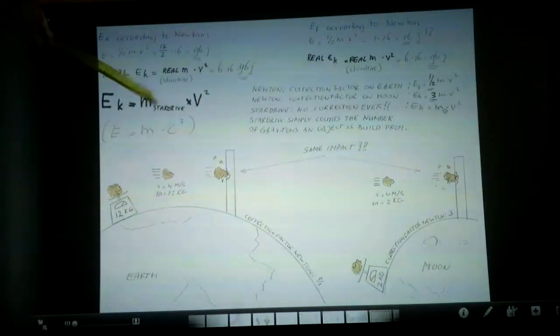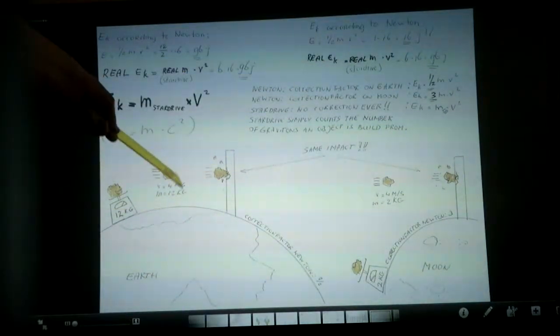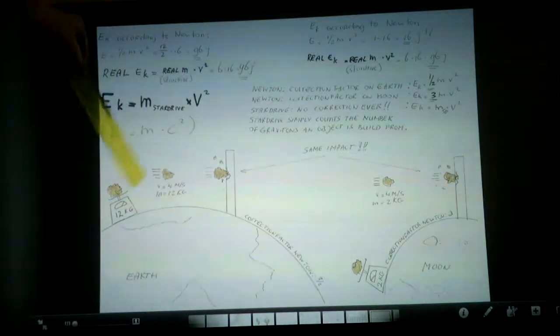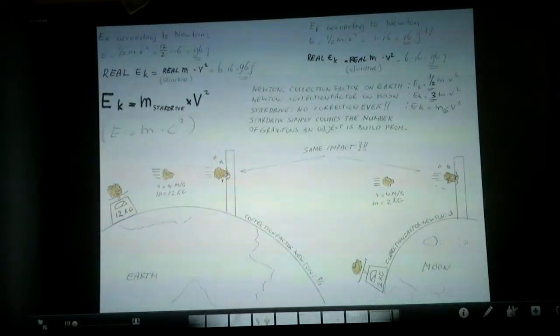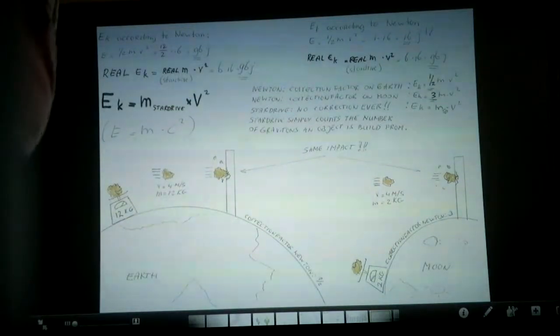In reality, how does star drive determine mass? Star drive takes the object, counts the number of gravitons it's made of, and objects are only made of gravitons, nothing else. No gluons, no bullshit, only gravitons, and you have to count them. When you count them, you get your object's mass, count the number of gravitons it's made of.